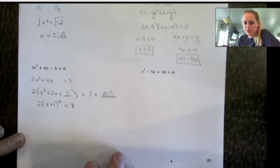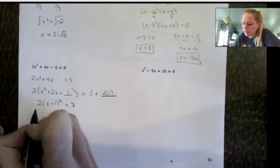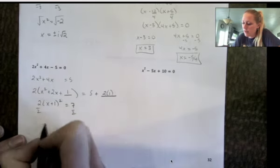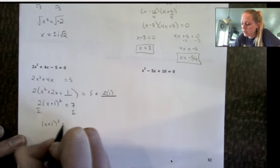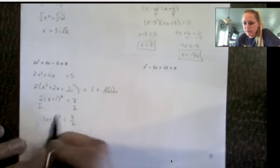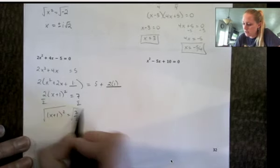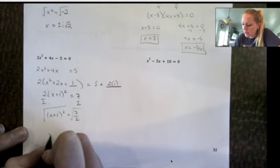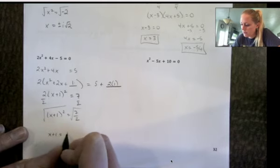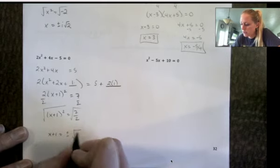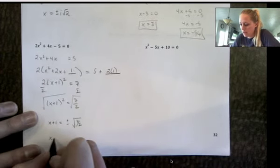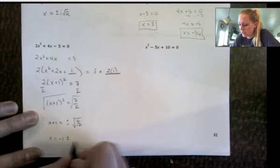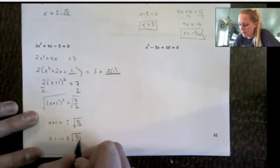So now I'm going to isolate the squared piece. So I'm going to divide by 2 and then take the square root. So I have x plus 1 squared equals 7 halves, square root both sides. So I have x plus 1 equals plus or minus the square root of 7 halves, and then I'm going to subtract 1. So x equals negative 1 plus or minus square root of 7 halves.